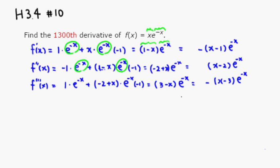So there's a clear pattern here. If we take the fourth derivative, the sign alternates: negative, positive, negative, positive — so the fourth would be positive. And the constant inside the parentheses increments each time: first derivative gives minus 1, second gives minus 2, third gives minus 3, so the fourth would be minus 4. The factor e to the negative x appears every time.